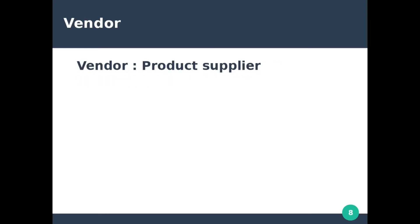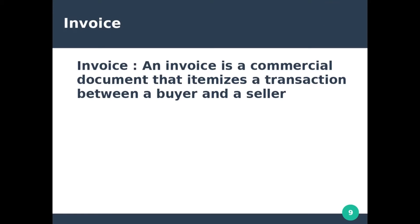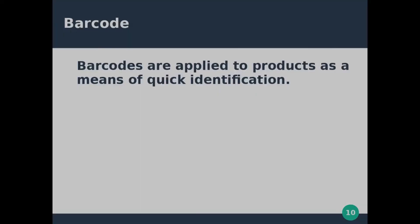A vendor is a person that supplies you with products. An invoice is a commercial document that itemizes the transaction between you and the person you are selling goods to. It confirms that the person bought that product from you and contains a list and the total amounts that the person paid.